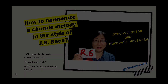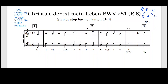Let's get started. This chorale is in F major with four phrases. As we look at the key signature, one flat, and the first note starts with F. At the end, the melody also ends with F, so we confirm this is in F major. We can hum the melody or use solfege to sing it through.